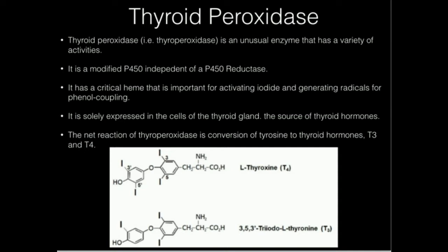This molecule, just like P450s, has a critical heme, but this time it's going to be used for activating iodide, because thyroid hormones are iodinated amino acids. It also generates radicals for the second part of the reaction mechanism, which is called phenol coupling, and we're going to look at the mechanism of that in this video.